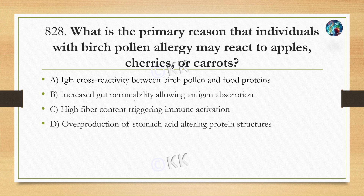Next question: what is the primary reason that individuals with birch pollen allergy may react to apple, celery and carrots? Option A: IgE cross-reactivity between birch pollen and food proteins. Option B: increased gut permeability allowing antigen absorption. Option C: high fiber content triggering immune activation. Option D: overproduction of stomach acid altering protein structure.